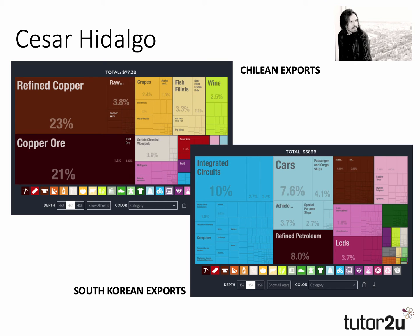Let's take the example of Chile and South Korea. Hidalgo's famous maps show that Chile is exporting atoms — they have essentially a high dependency on copper. Nearly 50% of Chilean exports are linked to copper, as shown in the top left chart. South Korea, by contrast, is a more complex economy and tends to export the rearranged form of those atoms in particular products such as cars, refined petroleum, LCD screens, and integrated circuits. So Chile has a lower level of economic complexity than does South Korea.